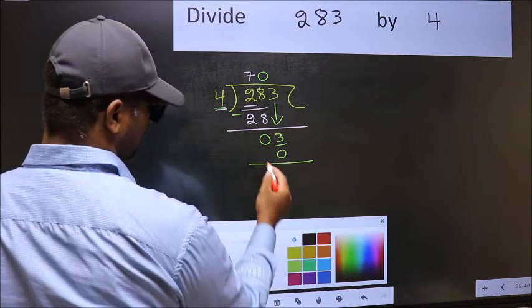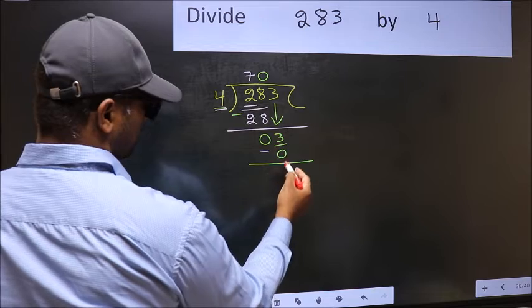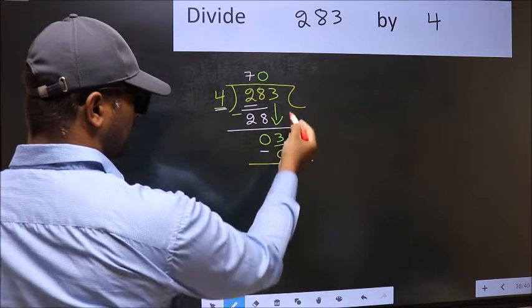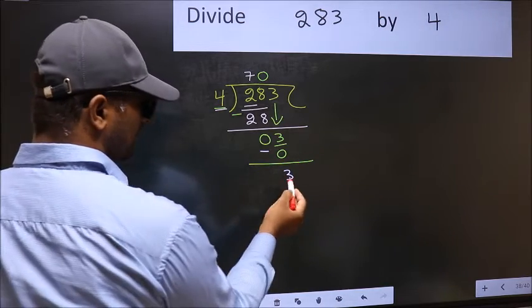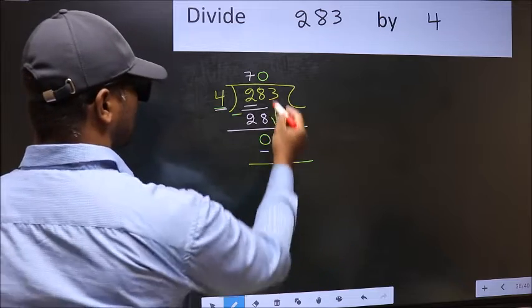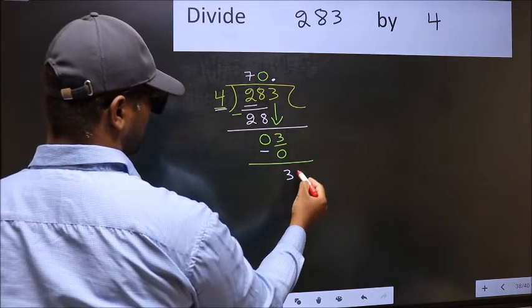Now, you should subtract. 3 minus 0, 3. Over here, we did not bring any number down, and 3 is smaller than 4, so now you can put a dot and take 0.